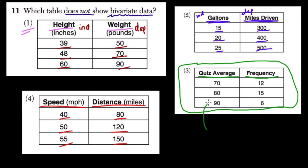Because, here, the quiz average that you got doesn't depend on the number of people that got that quiz average. The assumption is that everyone's working on their own. And, at the end, when you look at these quiz scores, you happen to find that 6 people got 90s, 15 people got 80s, and 12 people got 70.